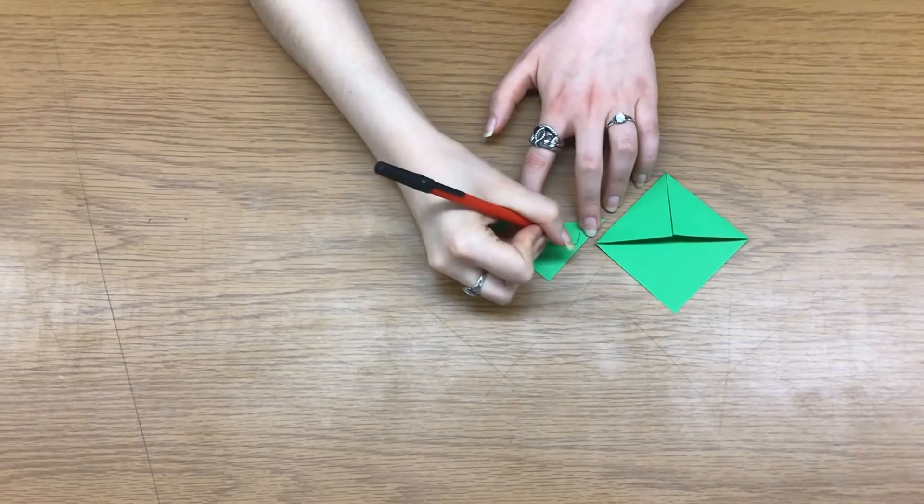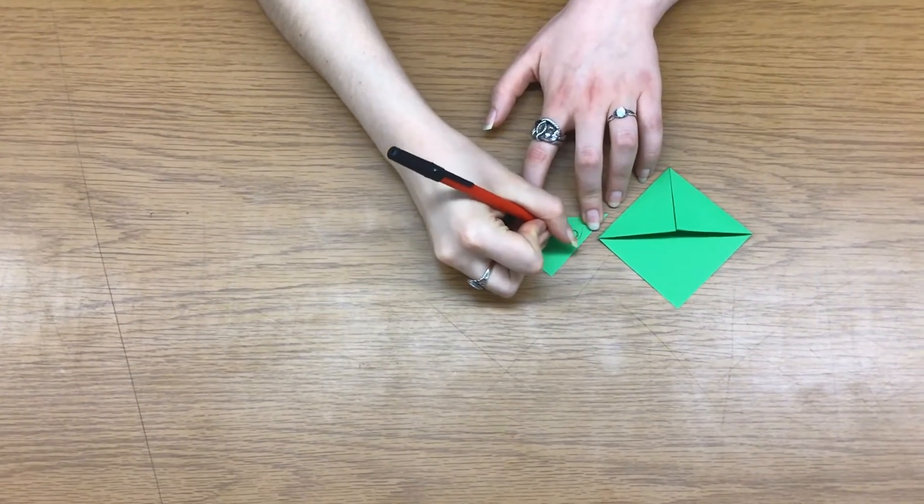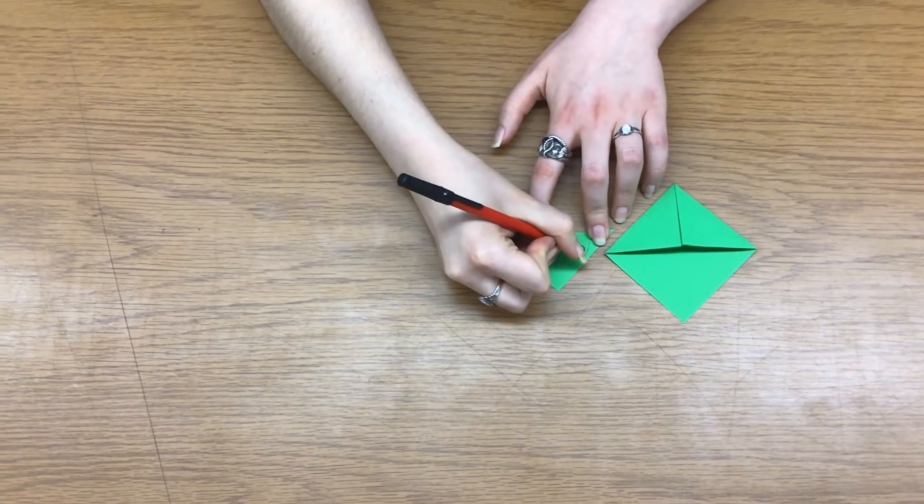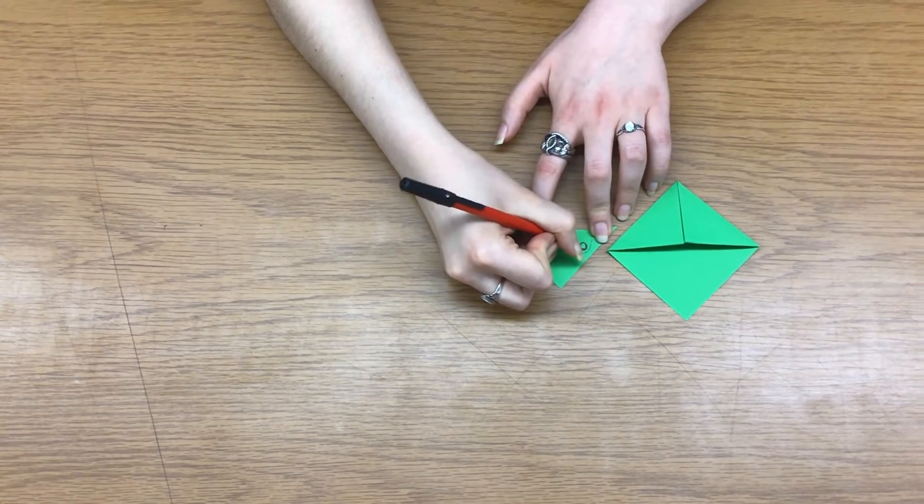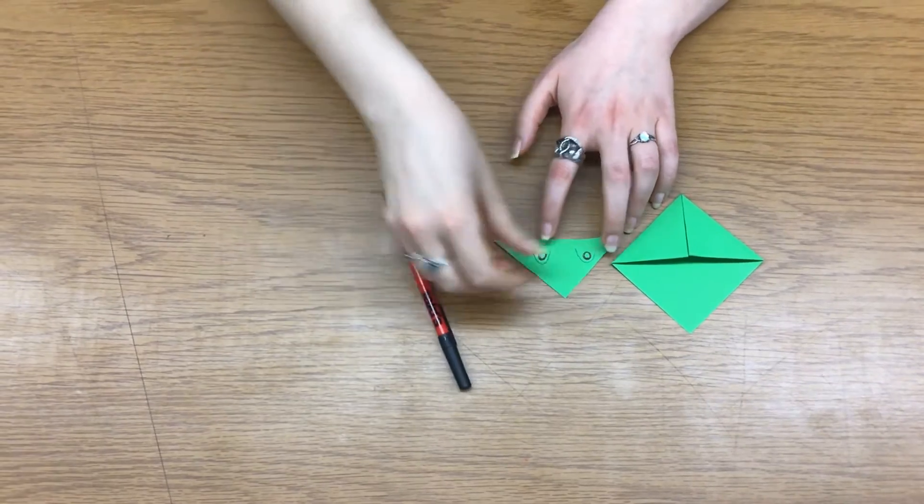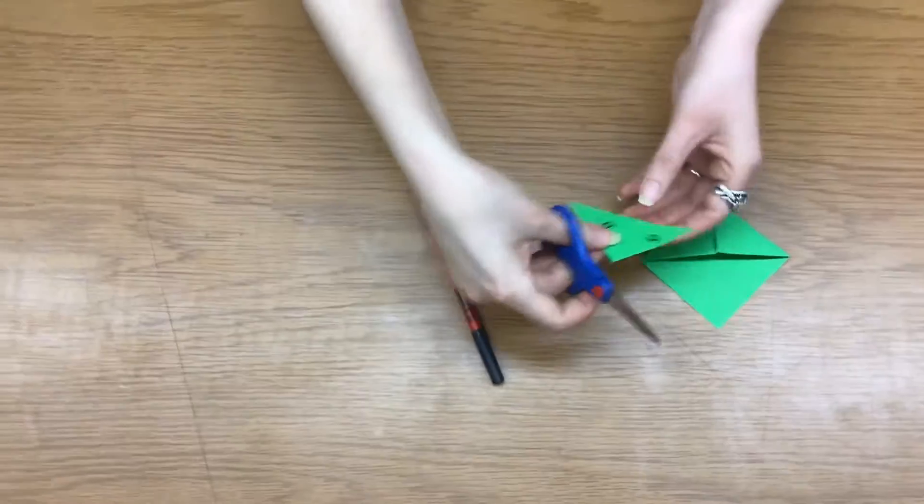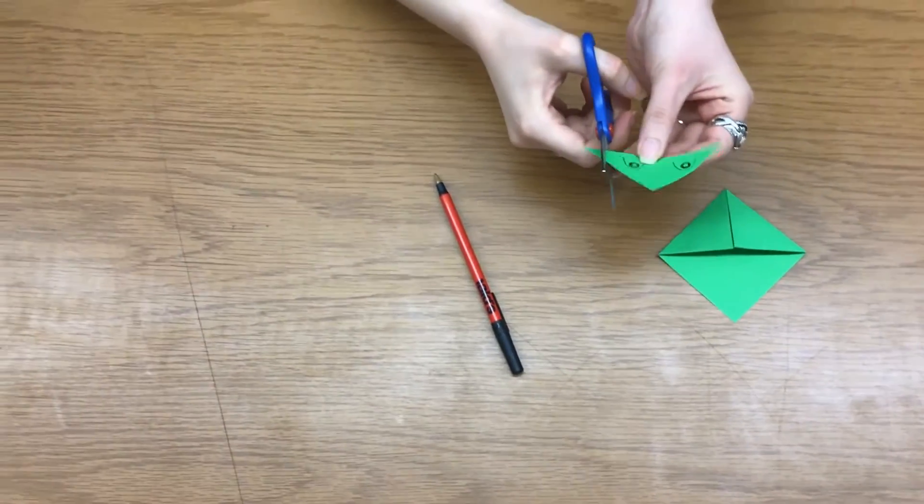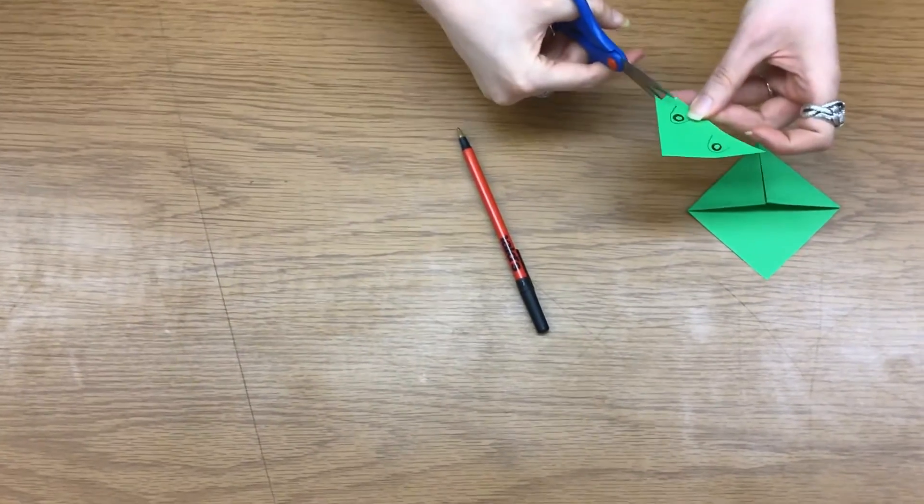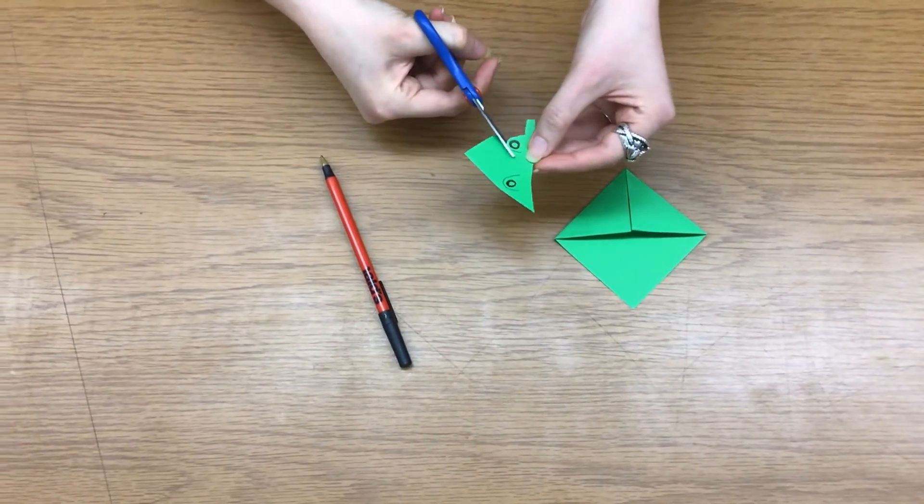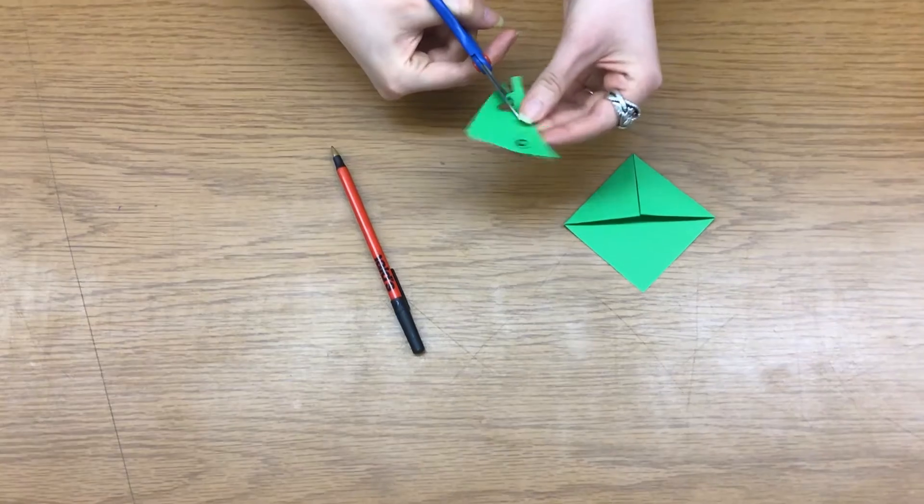And if you don't want to use this corner of the paper, if you have extra paper at home, you can use that for decoration. I'm just doing this because it's what I have and it doesn't need any extra. So here we go. We're going to cut out our cute little frog eyes.